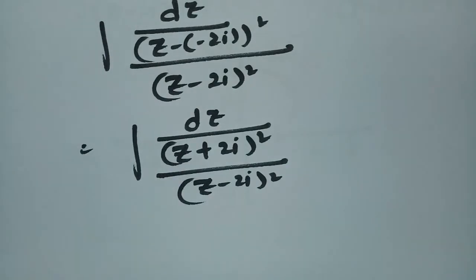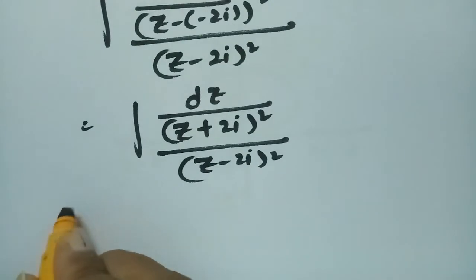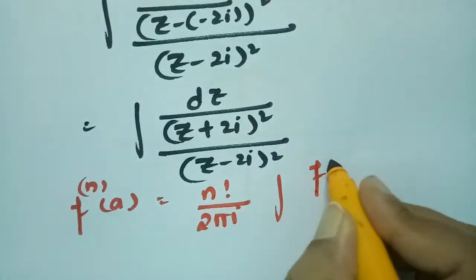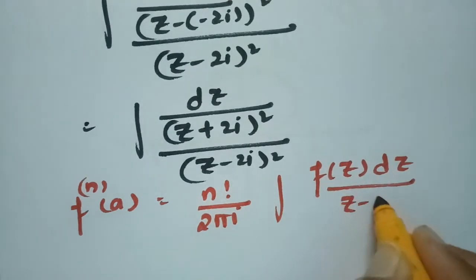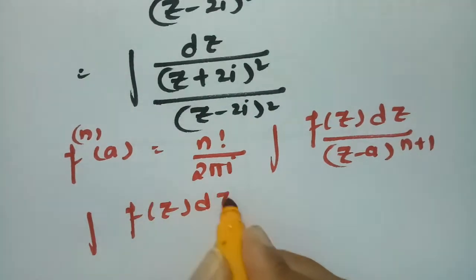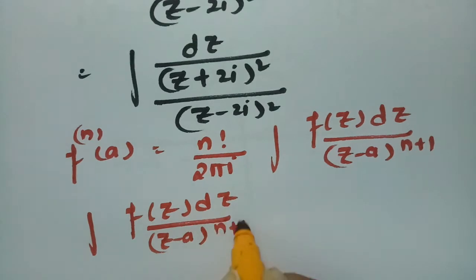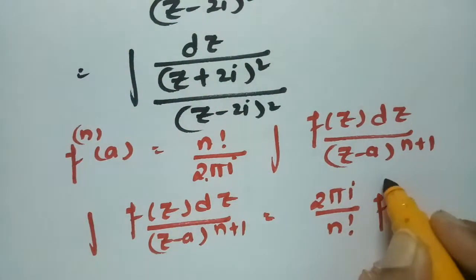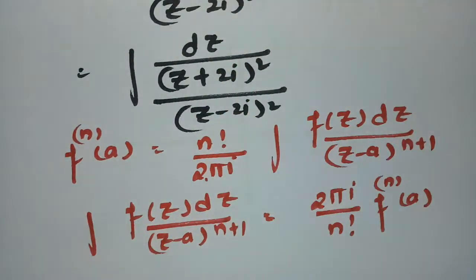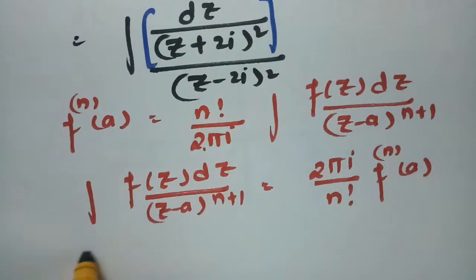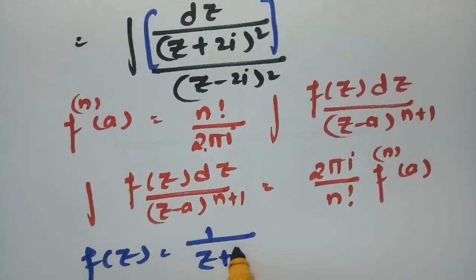Now I will apply Cauchy's generalization of Cauchy's integral formula: f to the nth derivative at a equals n factorial divided by 2πi times the integral of f(z) dz by (z minus a) to the power n plus 1. Rearranging, the integral of f(z) dz by (z minus a) to the power n plus 1 equals 2πi divided by n factorial times f to the nth derivative at a. Comparing with our integral, f(z) is equal to 1 by (z plus 2i) whole square.